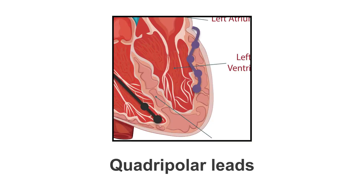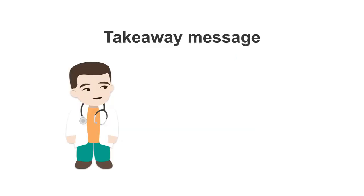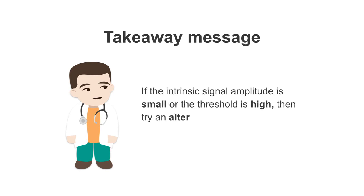Now, if we consider a quadrupolar lead, think about all the possible options we have and all the vectors on offer — it's really incredible. A quadrupolar lead gives us a huge amount of options. So your takeaway message: if the intrinsic signal amplitude is small or the threshold is high, then try an alternative pacing circuit and see if that helps.